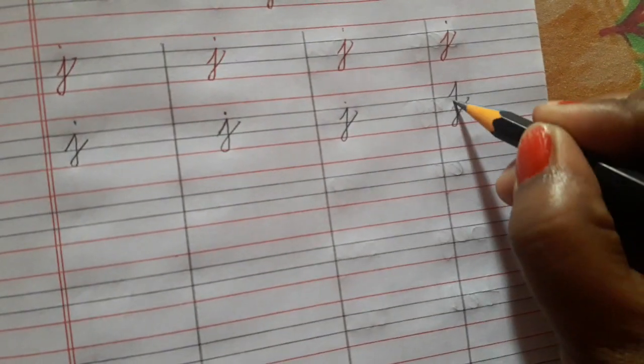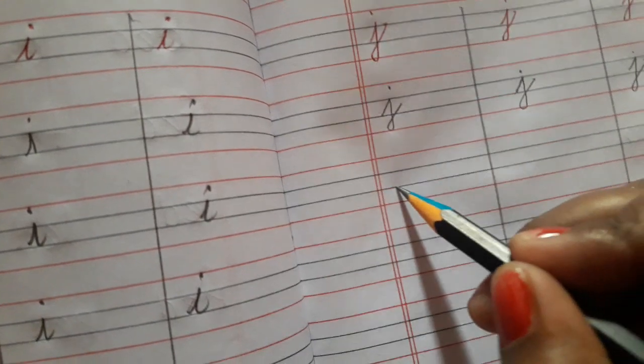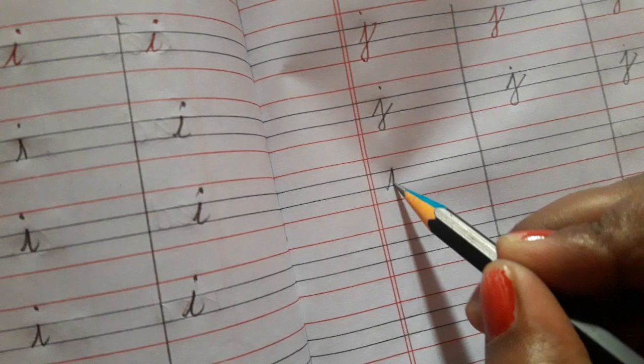And no child has to write like this. Okay. This is wrong. Understood everyone? You have to start from the second blue line. Here you have to start from the second blue line. Understood everyone? Like this.